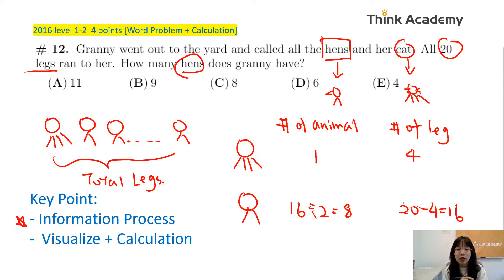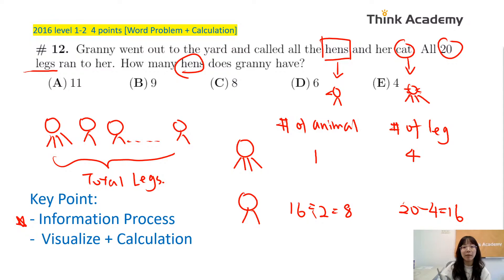For younger kids, it's very important to draw all the information out — even using a line graph or whiteboard drawing — because they often don't understand the relationships between quantities. Asking students to draw everything helps them visualize and process the information before doing the calculation. Even in my third-grade long-term classes, we ask students to draw line segment graphs to represent all the relationships.